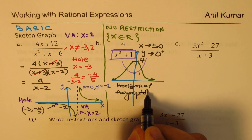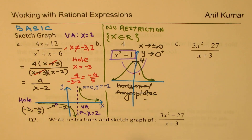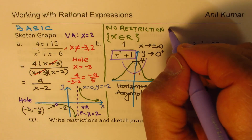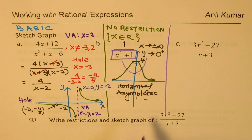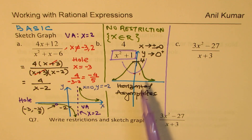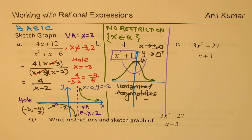To learn more about horizontal asymptotes, search 'Anil Kumar horizontal asymptotes playlist' for many videos on this. Now let's move on to the last example. This was a very critical example showing that rational expressions can exist without any domain restriction.